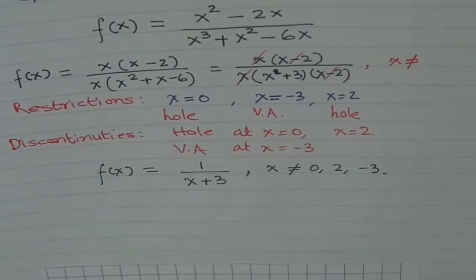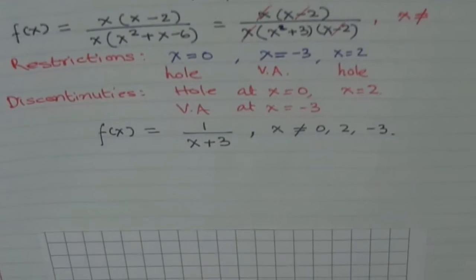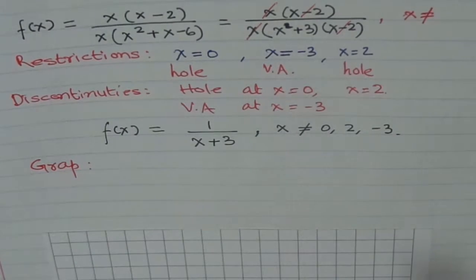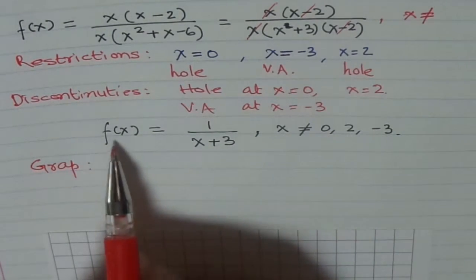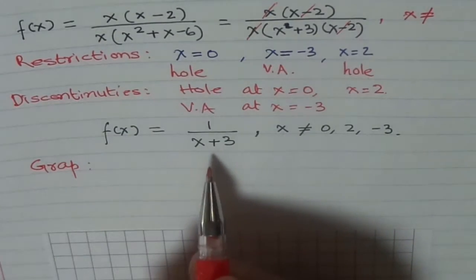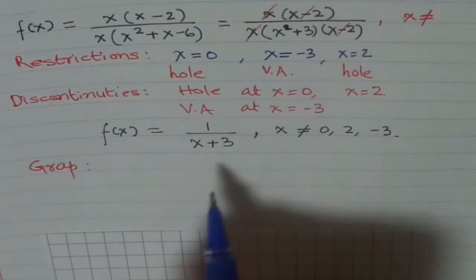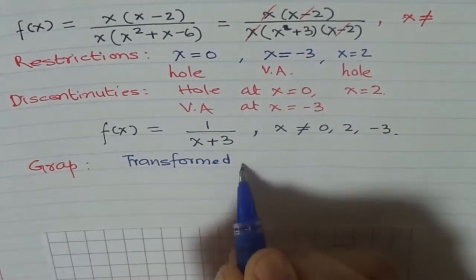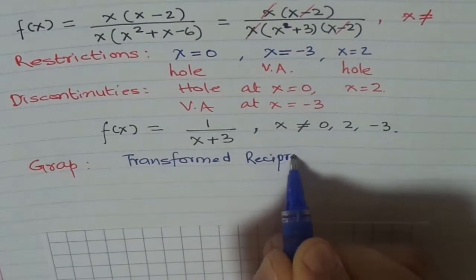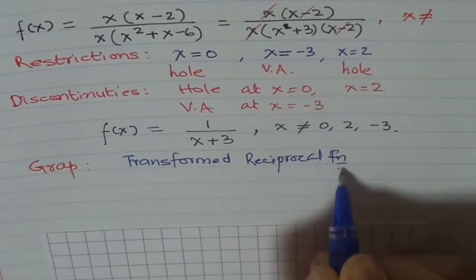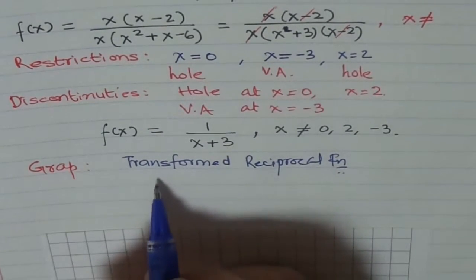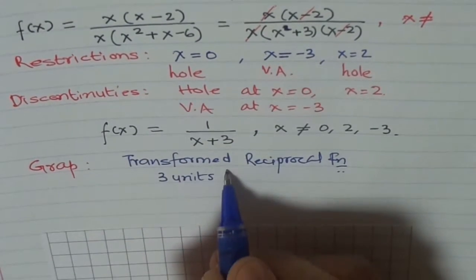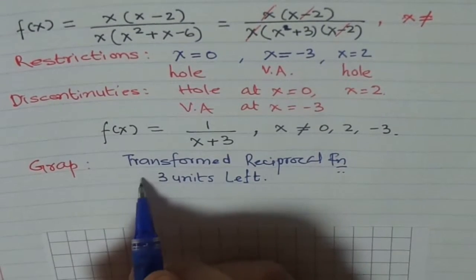Now let's see how to graph this function. If you look at the basic function f(x) equals 1 over (x plus 3), we have a reciprocal function — it's a transformed reciprocal function. The transformation is 3 units to the left.